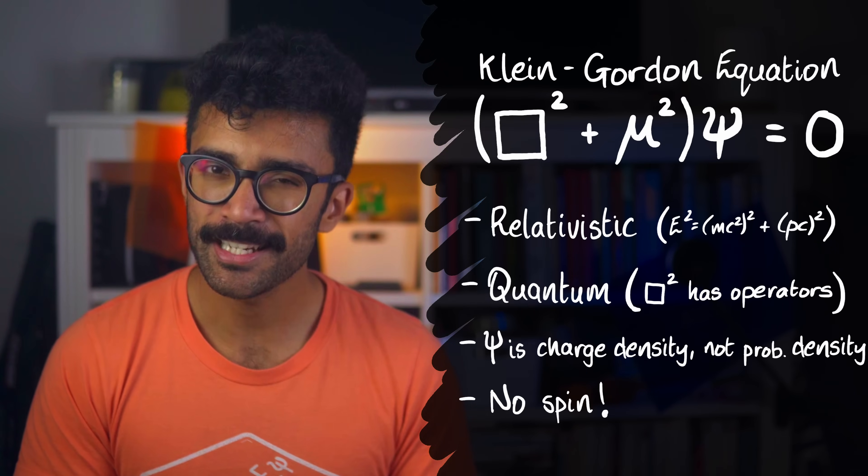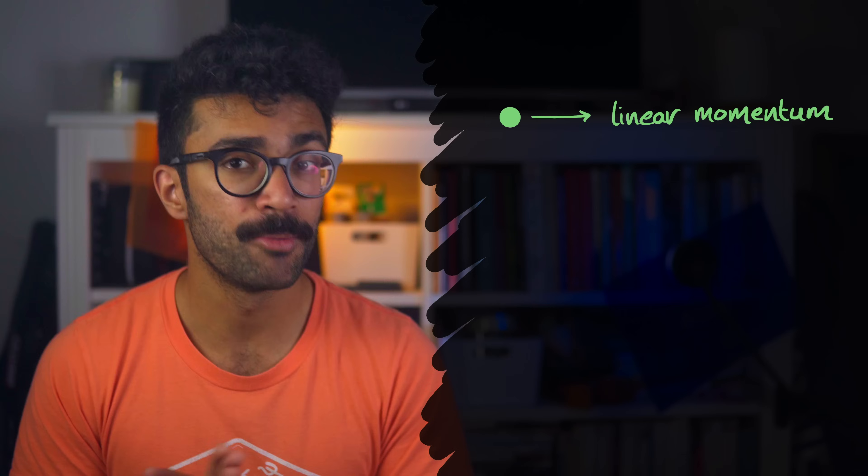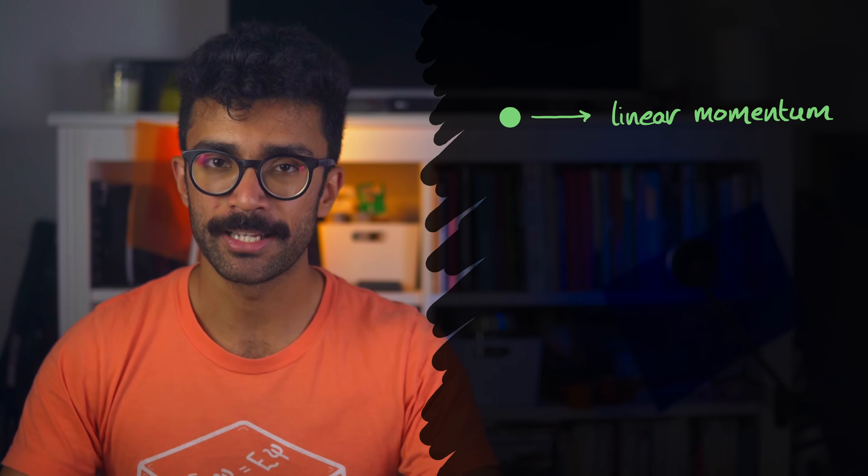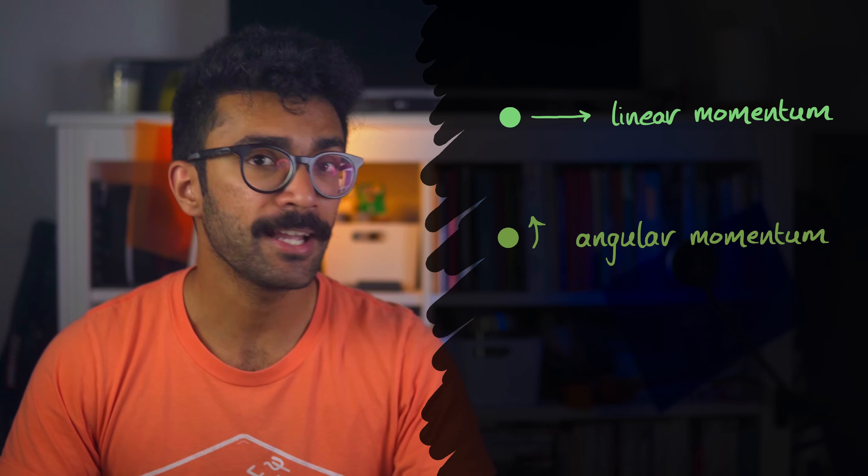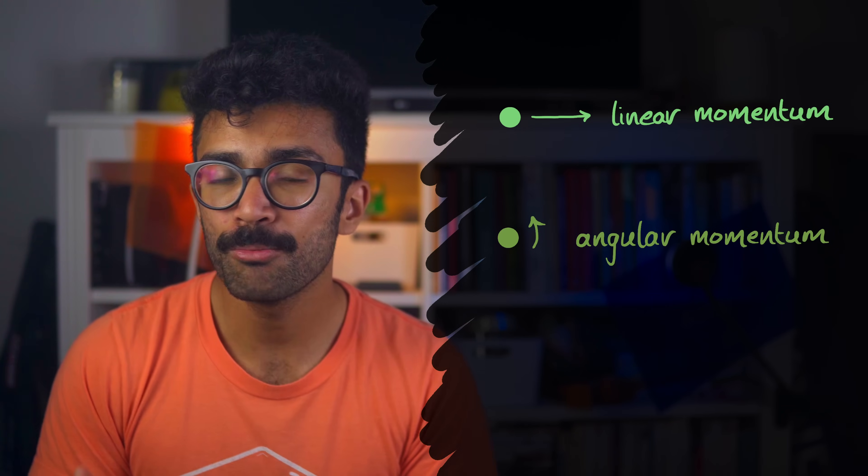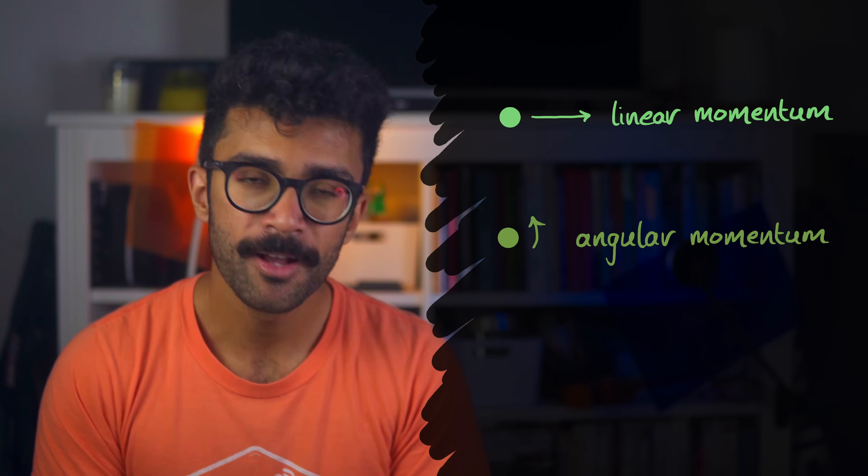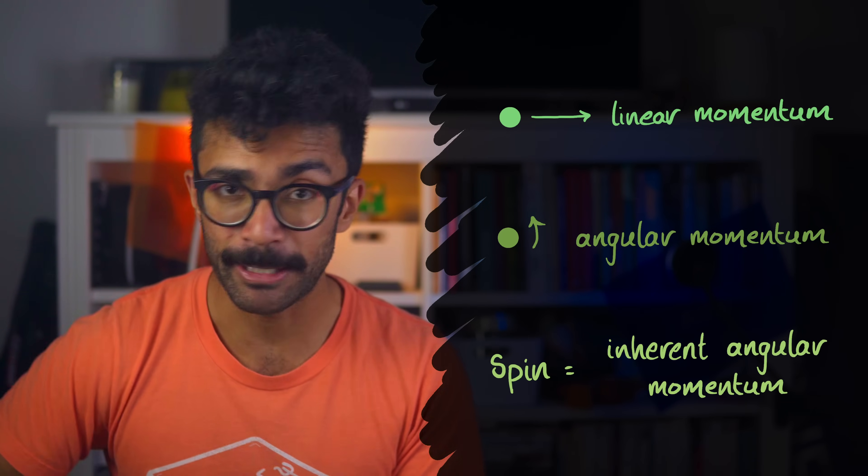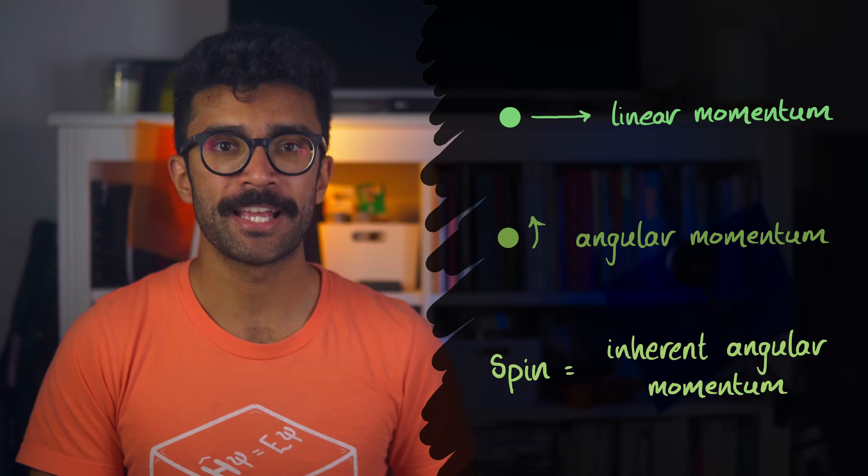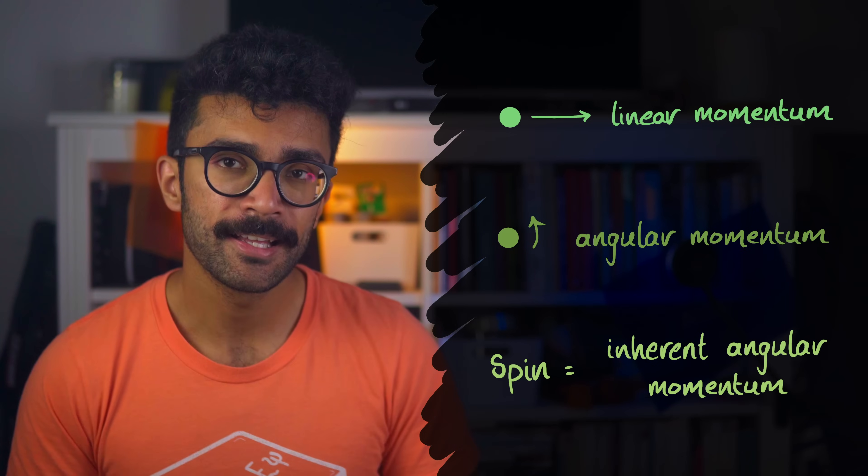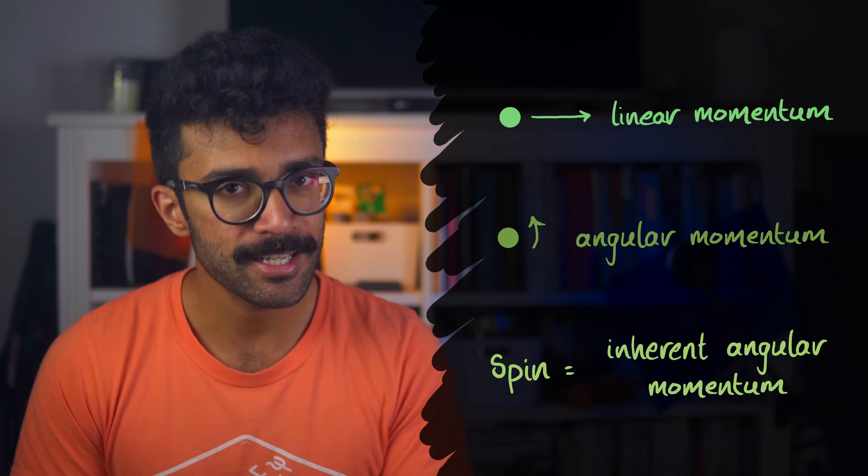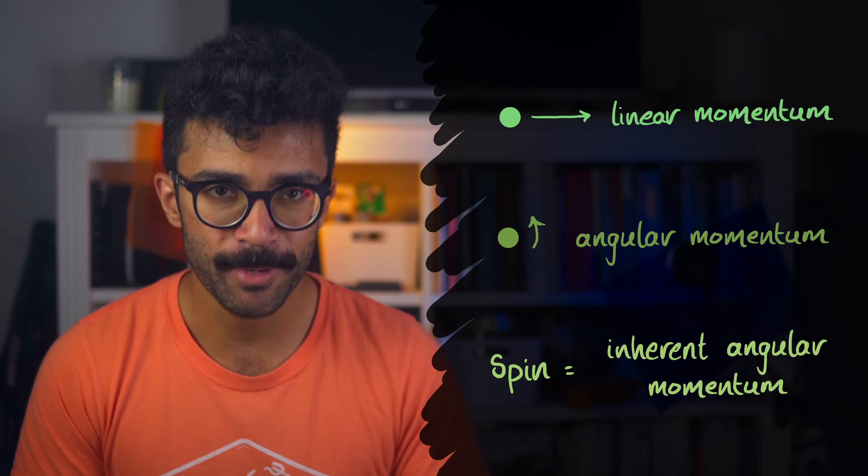So what do we mean by that? Basically, we know that for objects to have momentum, specifically linear momentum, they have to move in a straight line. And for objects to have angular momentum, they have to rotate or move along a curved path. Well, some particles behave like they have some amount of angular momentum built in. Even if they're not rotating or moving along a curved path, their angular momentum is not necessarily zero. This inherent angular momentum is what we call spin.